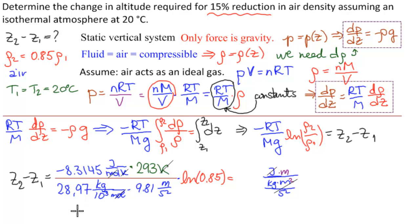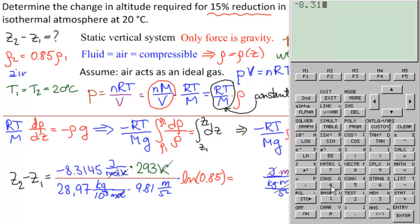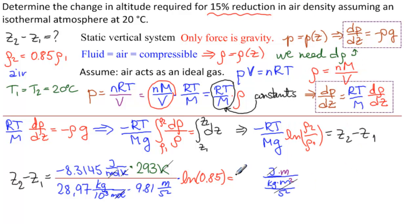So let's get our calculator out and calculate. We have minus 8.3145 times 293 times ln of 0.85. And now we're dividing by all of this, so we're going to use a parenthesis, 28.97 divided by 10 to the third times 9.81, parenthesis, enter. So 1,393 meters. So our answer is Z2 minus Z1 equals 1,393 meters.